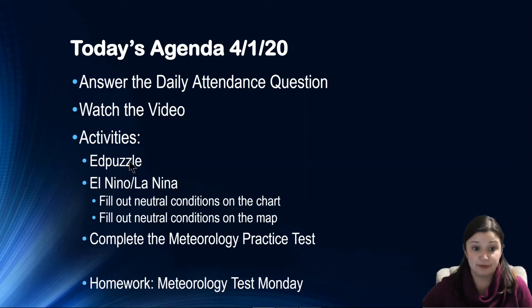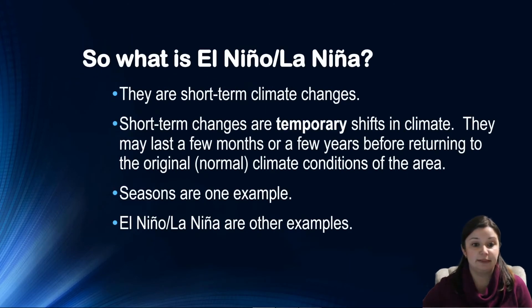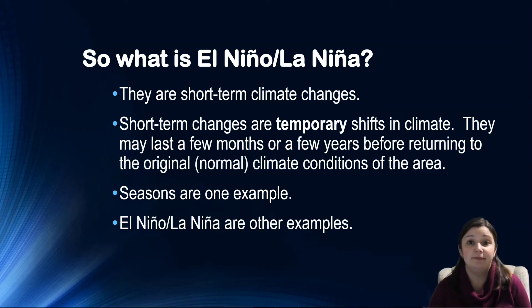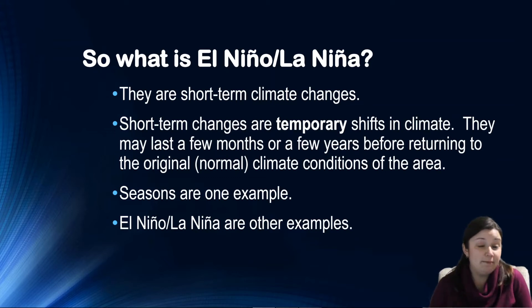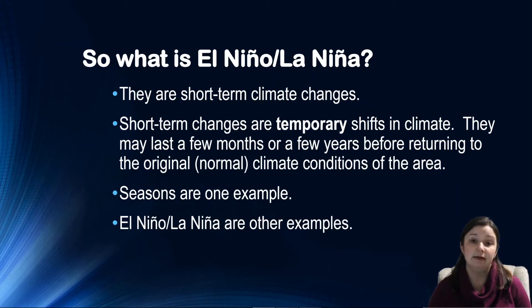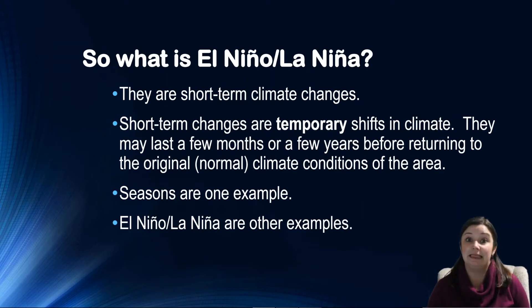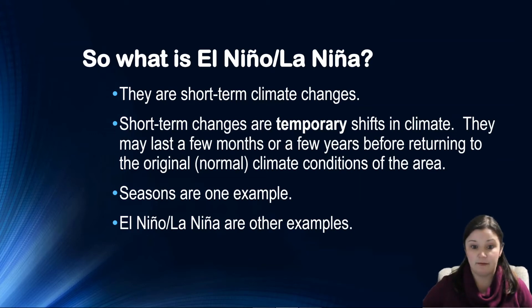Let's start talking about the new stuff — El Niño and La Niña. You hopefully have heard of El Niño and La Niña before; if not, that's fine. You're going to learn all about it today, tomorrow, and Friday. What this is is what we call a short-term climate change, meaning that it only changes the climate in a specific location — in this case the equatorial Pacific — for maybe a year, maybe a few months, and then it goes back to normal. This is not the same as a long-term climate change like global warming. This is more short-term, like the seasons. Seasons are a really good example of short-term climate change.